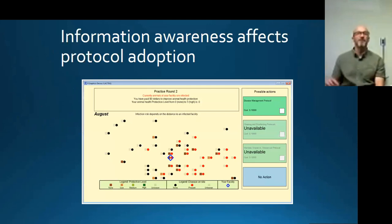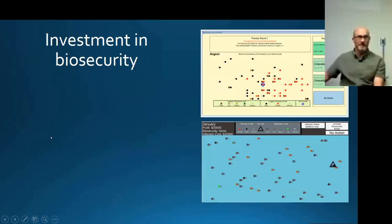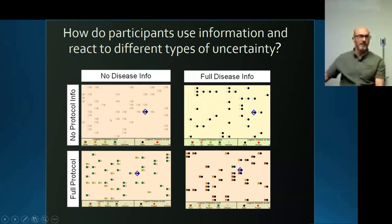We also have games that look at how information works — specifically whether we want to tell people about where the disease is in the system or what people are doing to prevent that disease. In this situation we can tell them absolutely nothing about what's going on — not about the disease or what people are doing to prevent it — or we might tell them everything about what the disease is doing and what people are doing to prevent it.